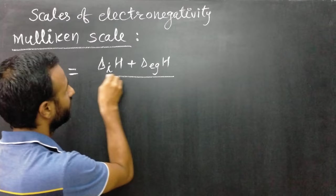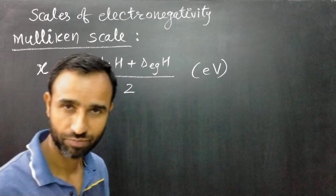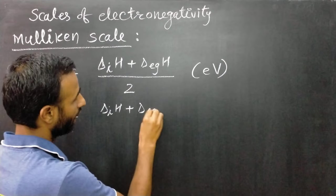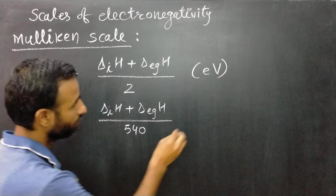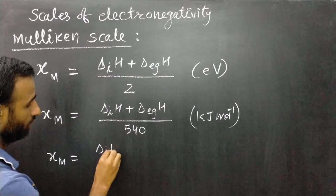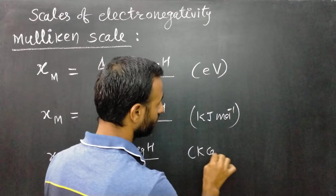If ionization enthalpy and electron gain enthalpy are measured in electron volts, then we divide by 2. Mulliken's electronegativity is equal to the sum of ionization enthalpy and electron gain enthalpy divided by 540 if these values are measured in kilojoules per mole, and divided by 130 if measured in kilocalories per mole.